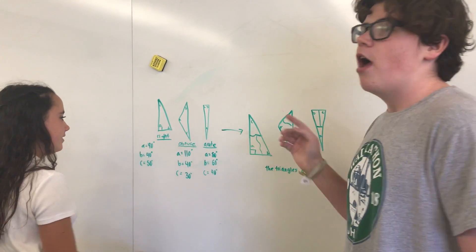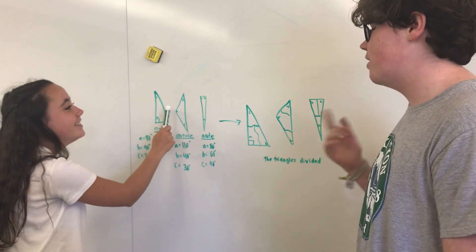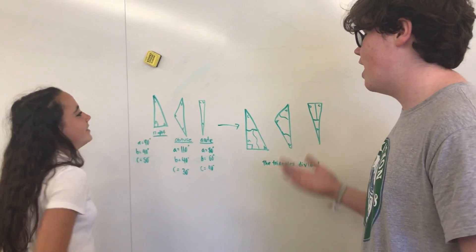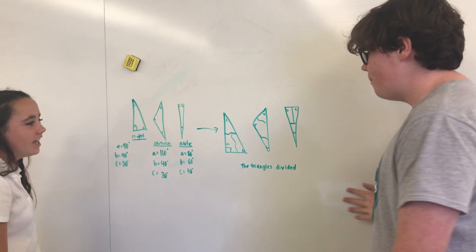A right triangle has to have at least one angle with 90 degrees. An obtuse triangle has to have at least one angle with more than 90 degrees. And an acute triangle has all angles that are less than 90 degrees. And we split them up.